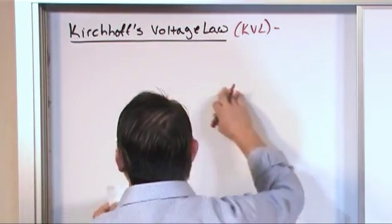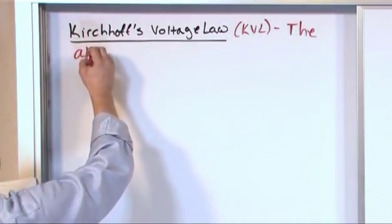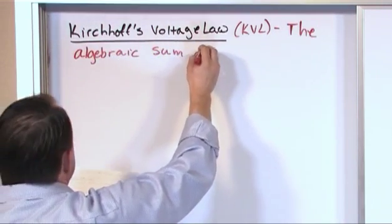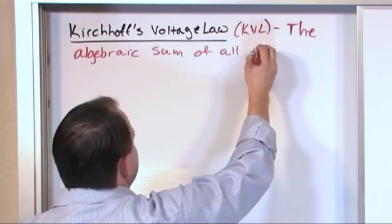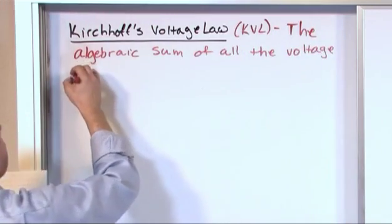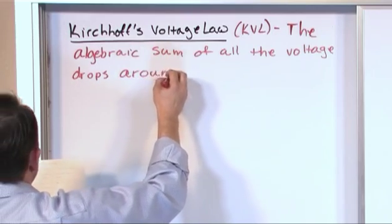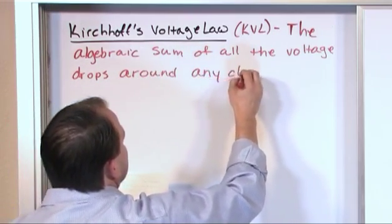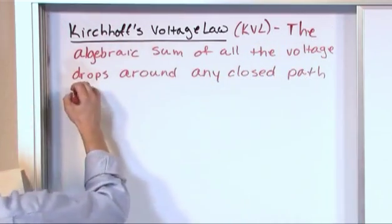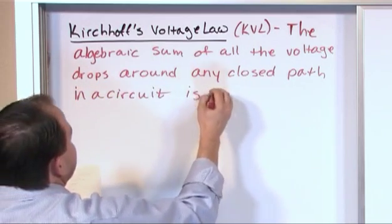The algebraic - again, that word algebraic - sum of all the voltage drops around any closed path in a circuit is zero. That's it.